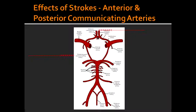What is a symptom of an aneurysm at the level of the anterior communicating artery? Aneurysms at the level of the anterior communicating artery will lead to visual field defects. What is a symptom of aneurysms at the level of the posterior communicating artery? An aneurysm at the posterior communicating artery would lead to cranial nerve 3 palsy, which is the oculomotor nerve.